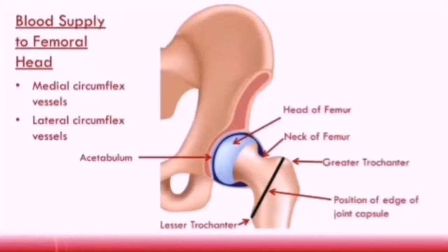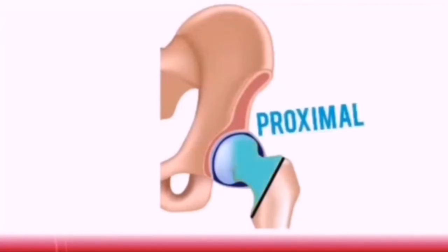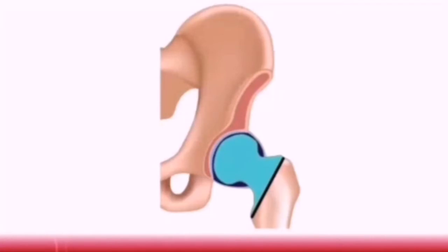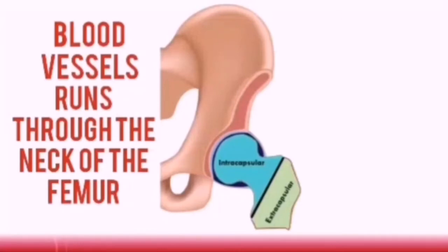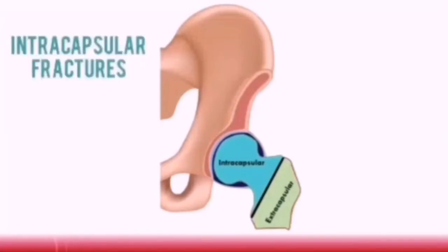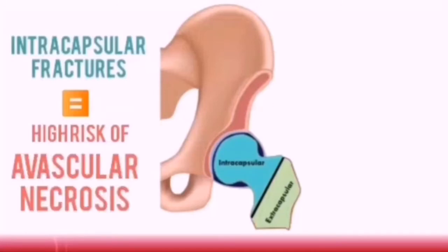Let's go into detail on the different types of hip fractures. The area of the hip proximal to the joint capsule line is called intracapsular, while the area distal to this line is called extracapsular. This is the main way hip fractures are classified — either intracapsular or extracapsular. The blood vessels supplying the femoral head run through the neck of the femur, which is intracapsular. Therefore, intracapsular fractures have a higher risk of disruption to those blood vessels and a higher risk of avascular necrosis compared to extracapsular fractures.